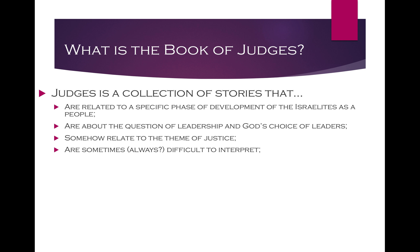The stories are sometimes — maybe always — difficult to interpret. Sometimes you get little stories, particularly in the first chapter of Judges, like about a king who has his thumbs and big toes cut off, and you wonder what you're supposed to learn from that. It's really not always clear, and that can be frustrating for us who are used to coming up with a definitive right answer. We live in a scientific age that gives definitive answers to things, but sometimes the answer is not definitive. That can be frustrating, but also kind of fun.